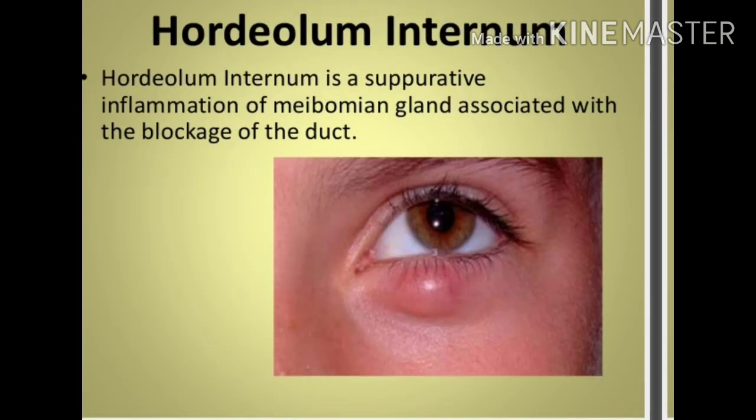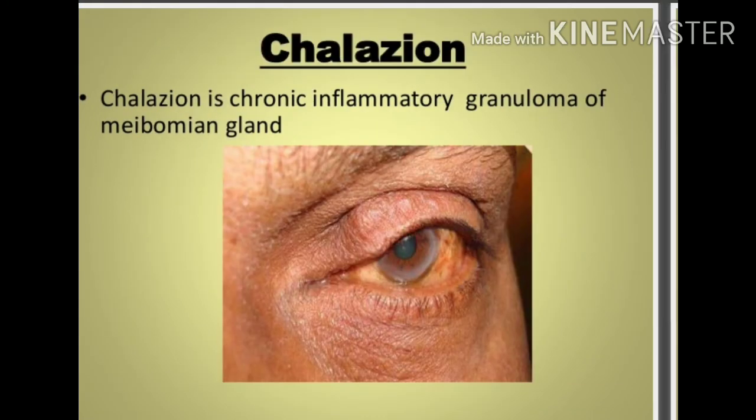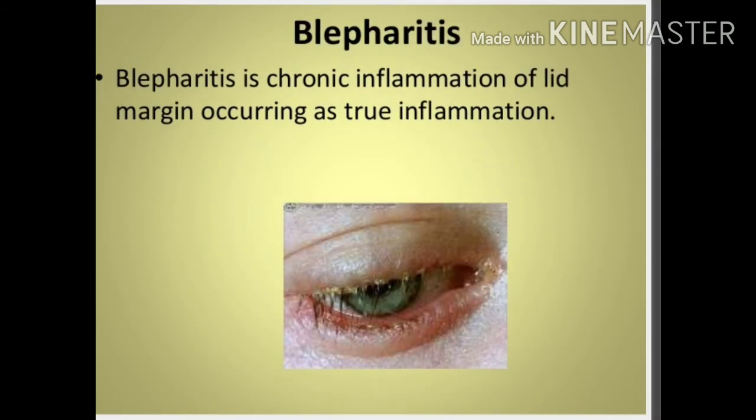Hordeolum internum is a suppurative inflammation of the Meibomian glands, associated with blockage of the duct. Chalazion is a chronic inflammatory lesion — a granuloma — of the Meibomian gland. Blepharitis is the inflammation of the eyelid, especially the lid margin.